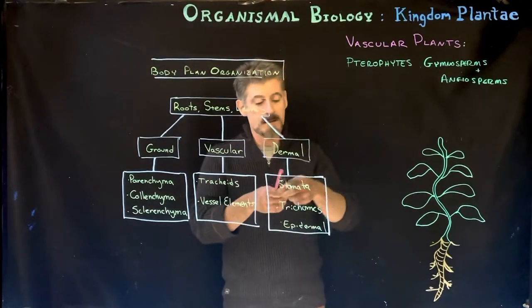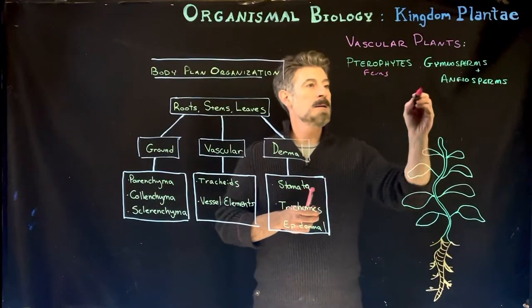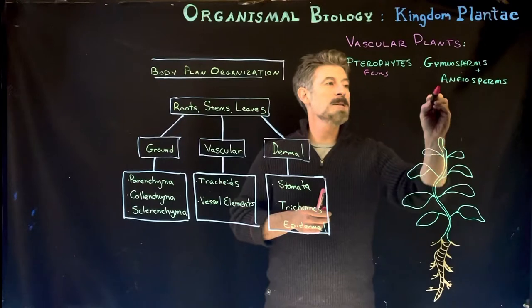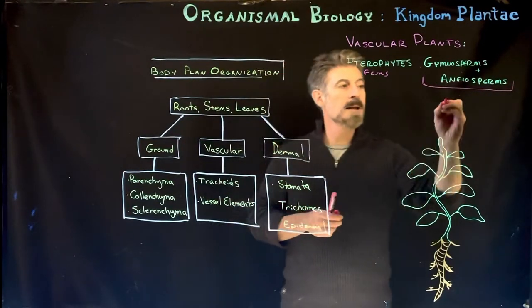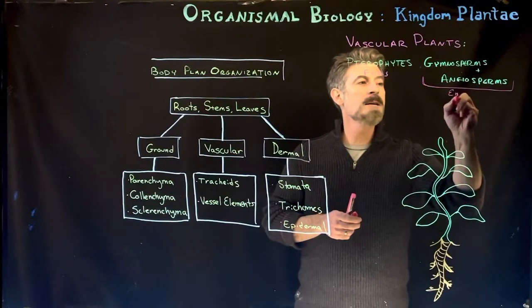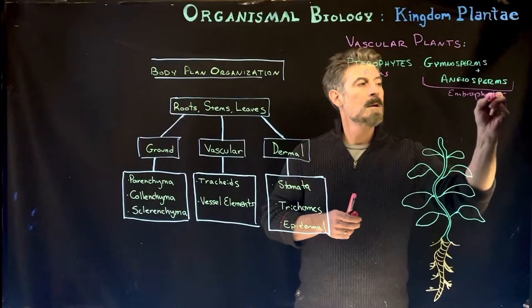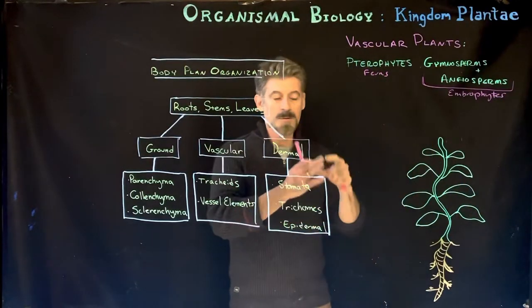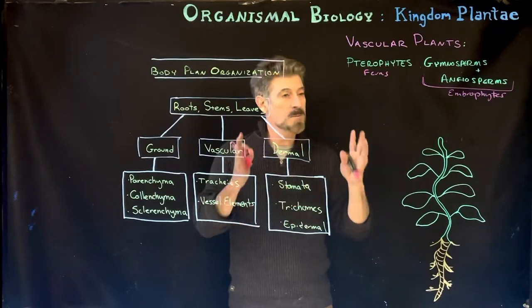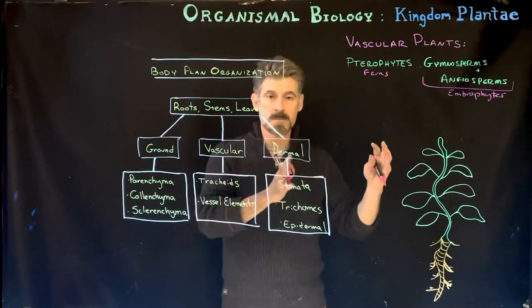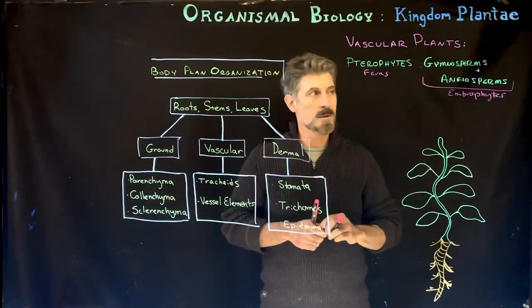We're talking about the pterophytes — remember, this is the group that are the ferns. And then the gymnosperms and angiosperms — that's not a phylum, but it's the way they're typically classified. These are the seed plants, sometimes referred to as embryophytes because they have seeds and the little embryo is inside a seed. We're going to get to seeds next as we start into the gymnosperms, covering seed structure, gymnosperm life cycle, and then flowers with angiosperms.